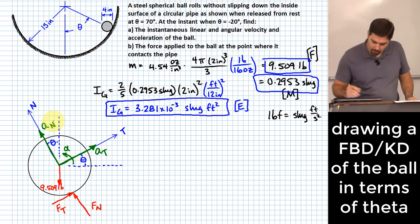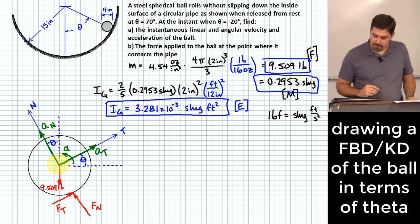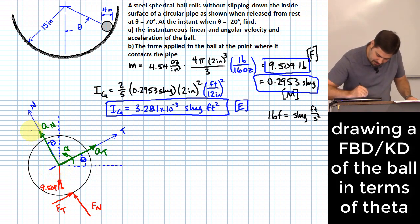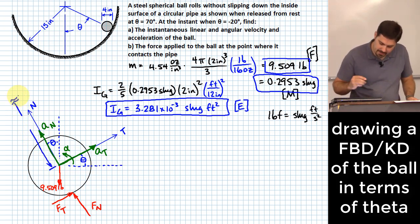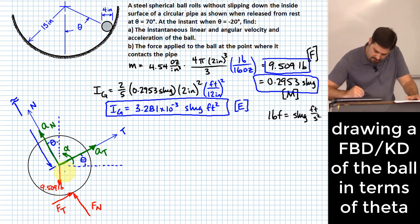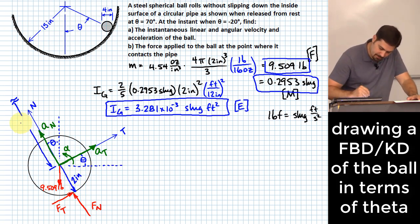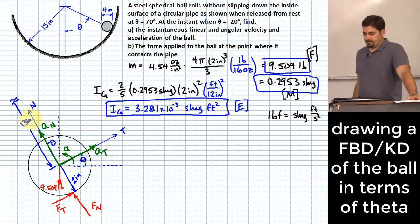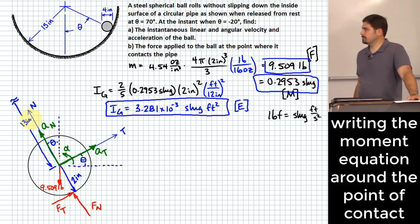The distance from the center of the pipe wall to the center of the ball is 15 inches minus 2 inches (the ball's radius), giving 13 inches. This is the path radius for the ball's center as it travels around the pipe.